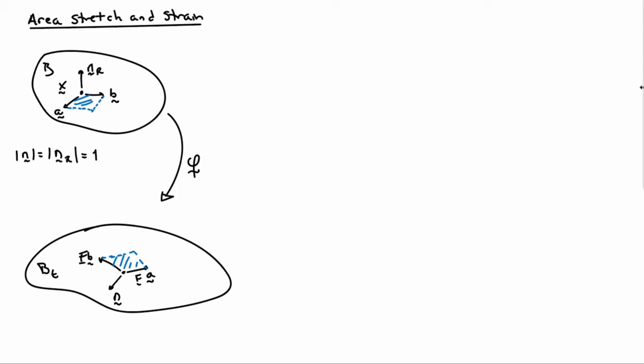After deformation, the point big X will map to the point little x, and we'll have the vectors a mapping to fa and b mapping to fb. So the area bounded by the parallelogram ab moves to the area bounded by the parallelogram fa and fb. The normal vector to this new area we'll call n, where the norm of little n is also equal to 1, just like the norm of nr.